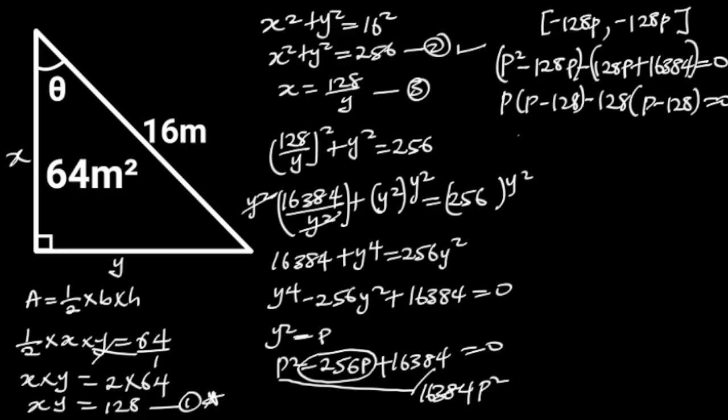Note that these two brackets must be the same. Hence, we can say that p minus 128 times p minus 128 is equal to 0, which can be written as p minus 128 squared is equal to 0.